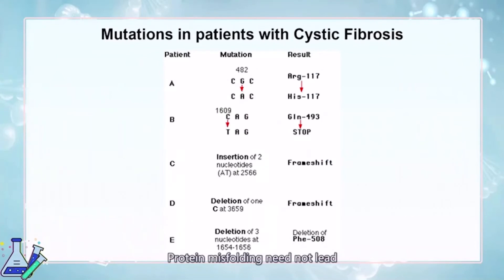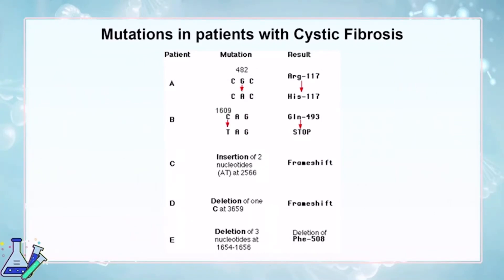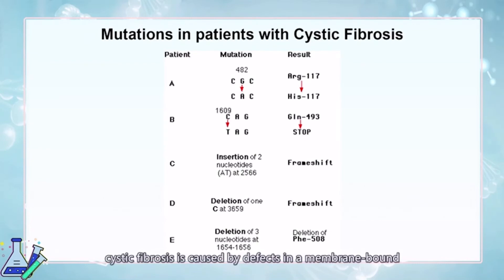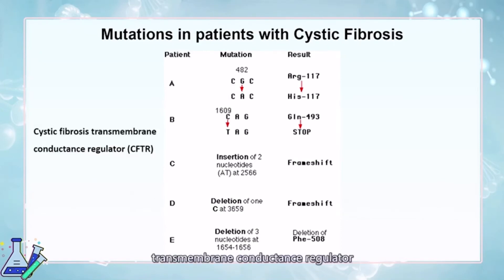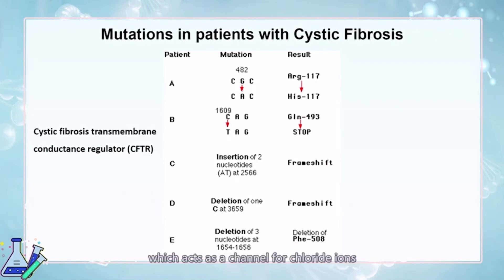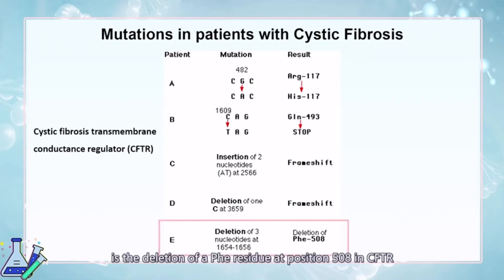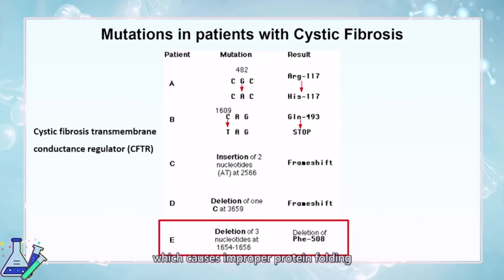Protein misfolding need not lead to amyloid formation to cause severe disease. For example, cystic fibrosis is caused by defects in a membrane-bound protein called cystic fibrosis transmembrane conductance regulator, which acts as a channel for chloride ions. The most common cystic fibrosis-causing mutation is the deletion of a phenylalanine residue at position 508 in CFTR, which causes improper protein folding. Most of this protein is then degraded and its normal function is lost.